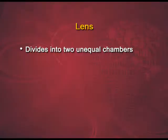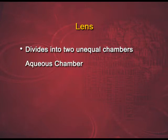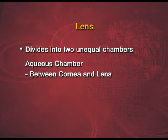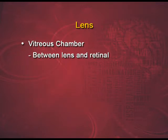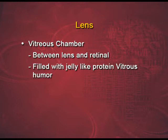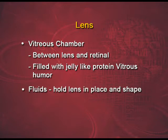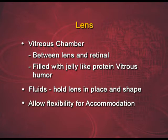The eye is very often equated to a camera, two common things being the lens and the regulation of the amount of light entering the eye. The lens of a human eye divides it into two unequal parts. The first is the aqueous chamber, between the cornea and the lens — smaller in size and filled with a water-like substance known as the aqueous humor. The second is the vitreous chamber, between the lens and the retina, filled with a jelly-like protein called the vitreous humor. These fluids are responsible for holding the lens in its place and shape, and also allow flexibility for accommodation.